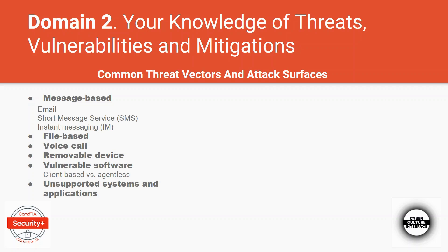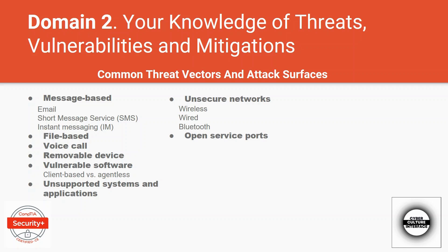Unsupported systems are those applications whose producers or manufacturers are no longer willing to provide technical support. When such systems have issues, they can be a very good opportunity for hackers to get into the organization. Then we have unsecured networks — wireless, wired, or Bluetooth — networks that are open, where the SSID is publicly visible or the passkey is a default or easy-to-guess key, or when Bluetooth is not properly secured. We also have open service ports: when services that are not in use are left open, they can be good attack surfaces for a hacker to get into your system.